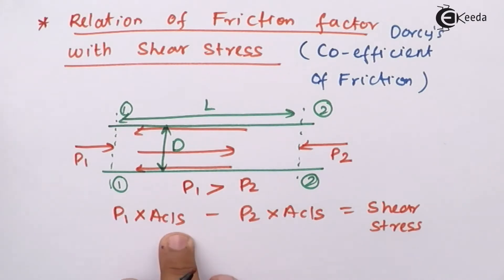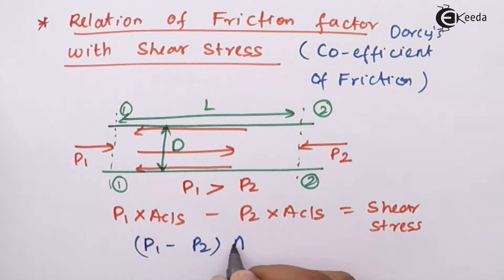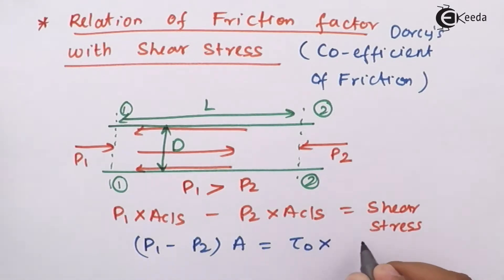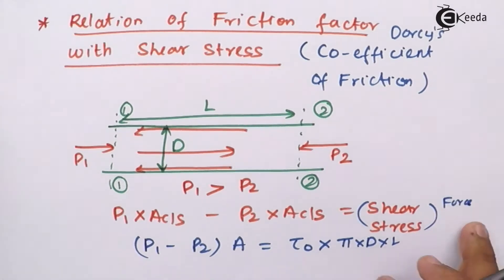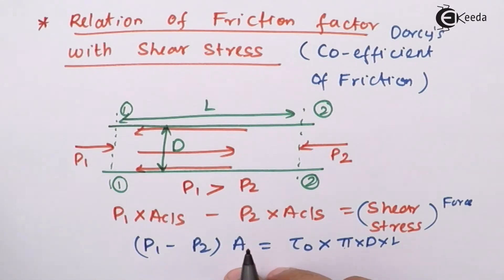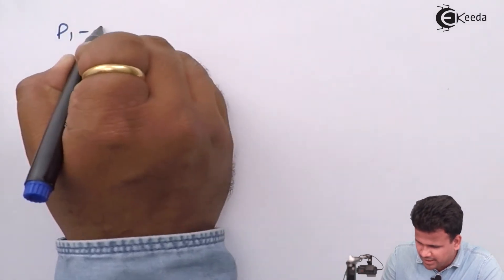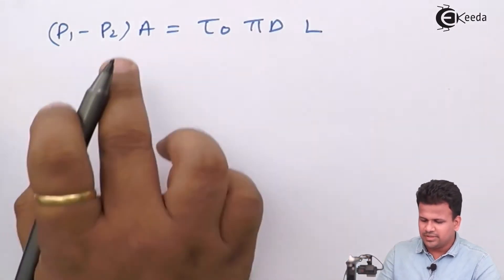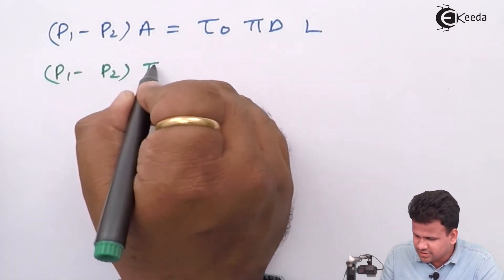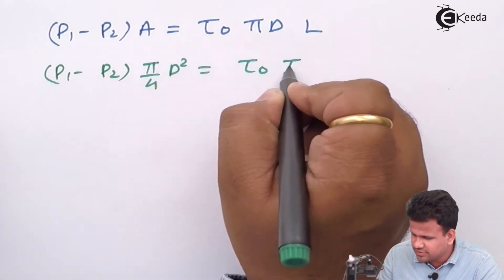Applying summation of forces in the x-direction (ΣFx), we get: P1 × A minus P2 × A equals the force due to shear stress. The force due to pressure P1 acts to the right and P2 to the left. Since the area of cross-section is the same, this becomes (P1 − P2) × A = τ₀ × π × D × L, where τ₀ is the wall shear stress.